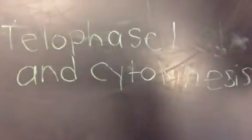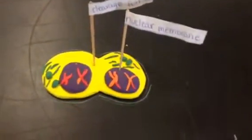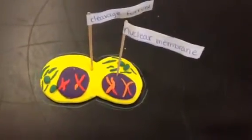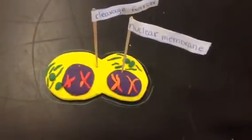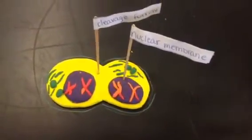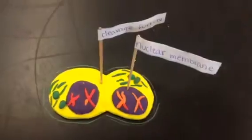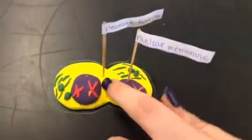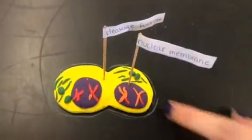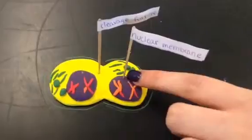The next phase is telophase one, in which a nuclear membrane forms around each cluster of chromosomes. Cytokinesis follows telophase one, forming two new cells. This is the cleavage furrow at the nuclear membrane.